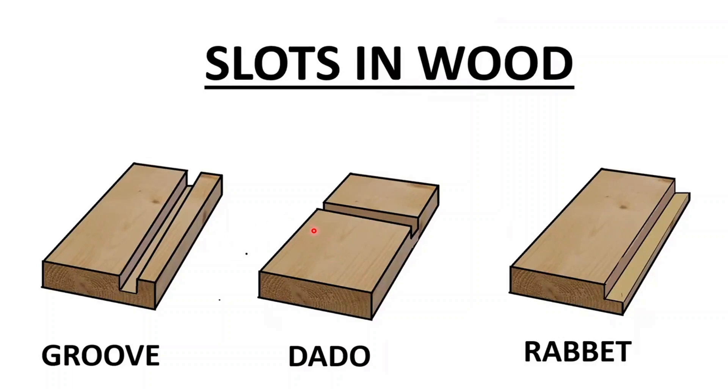If the slot goes against the lines of the wood, the lines of the wood are going this way and the slot's going against it, it's called the dado.